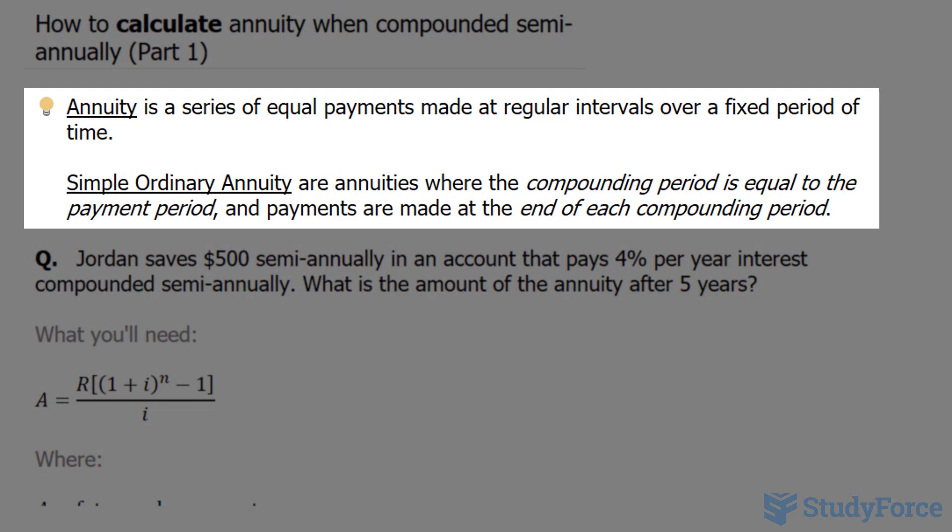To start, let's discuss some key terms. Annuity is a series of equal payments made at regular intervals over a fixed period of time, whereas simple, ordinary annuity are annuities where the compounding period is equal to the payment period, and payments are made at the end of each compounding period.